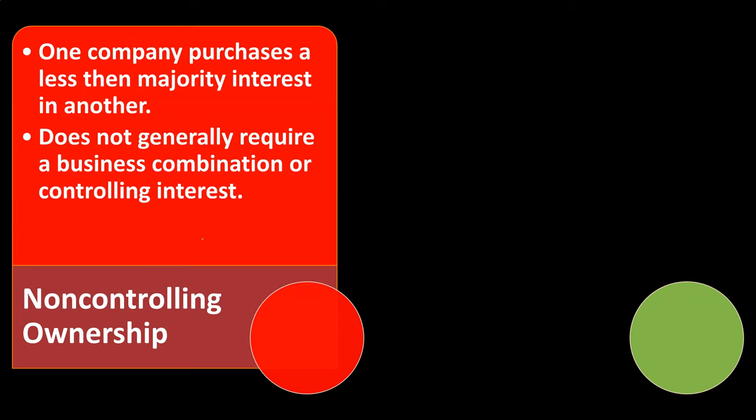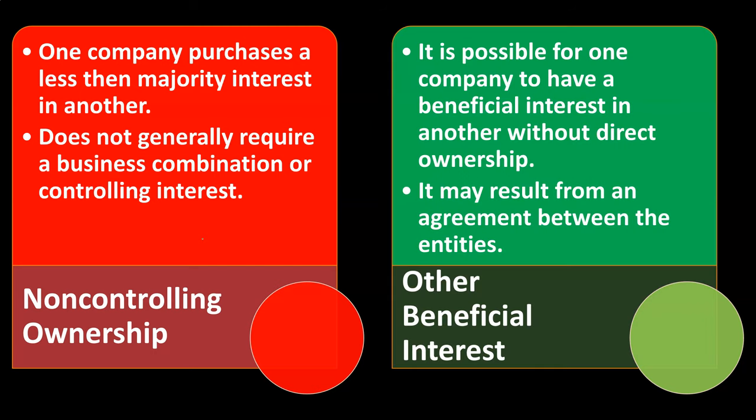From an accounting standpoint, if there is a controlling interest — typically 51% or more of the stock owned by the other company — then you're going to have to do combined financial statements. If it's less than that, then typically you'll account for it in some other way and the financial statements will not be combined in that same way.